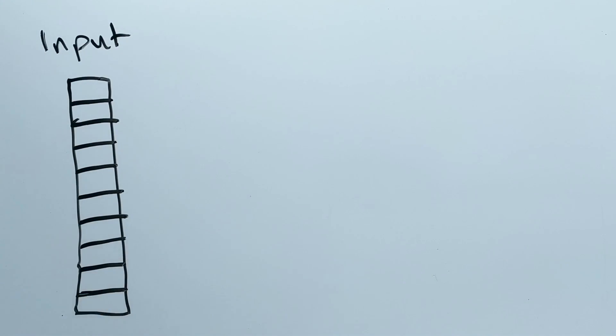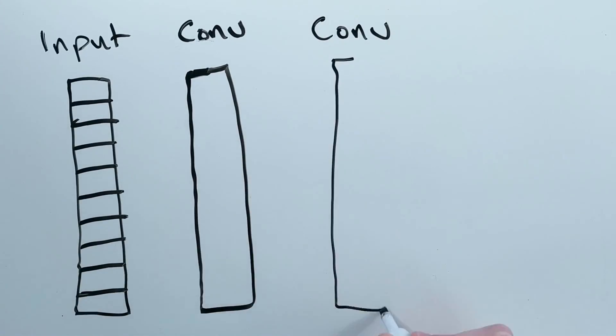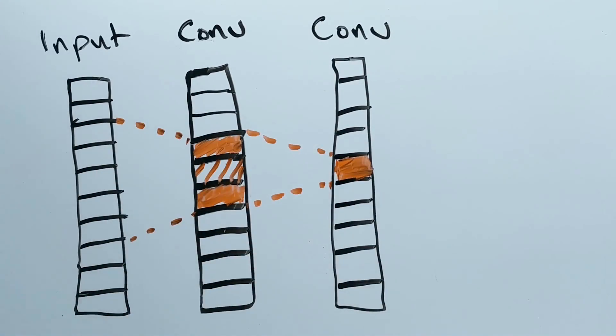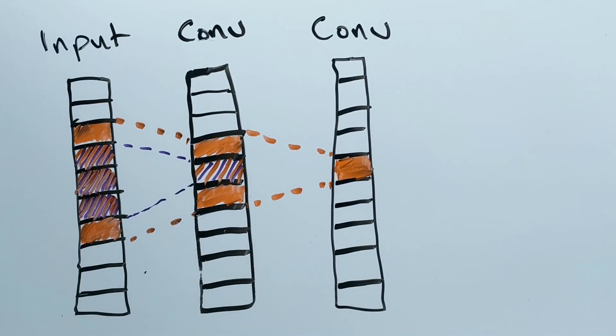To review, the receptive field is the portion of the input needed to create the current feature that we are looking at in any convolutional layer. Like how cells in your eyes only see parts of your vision, the receptive field starts with small portions of the input and later grows as the convolutions combine them together in order to make sense of what is seen.